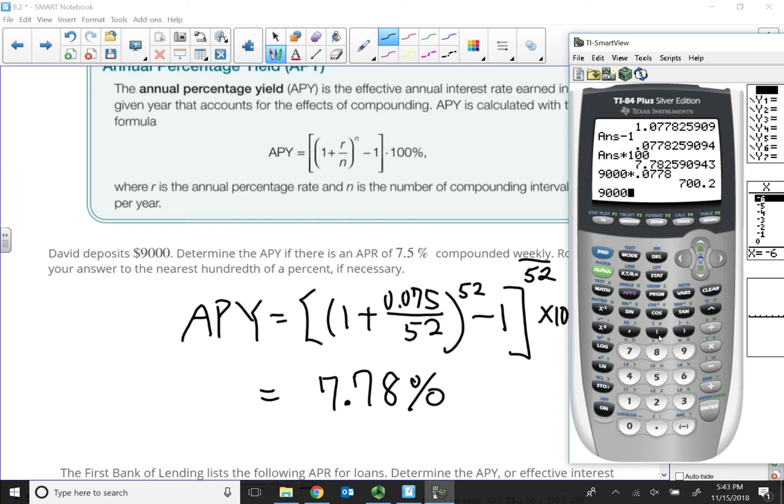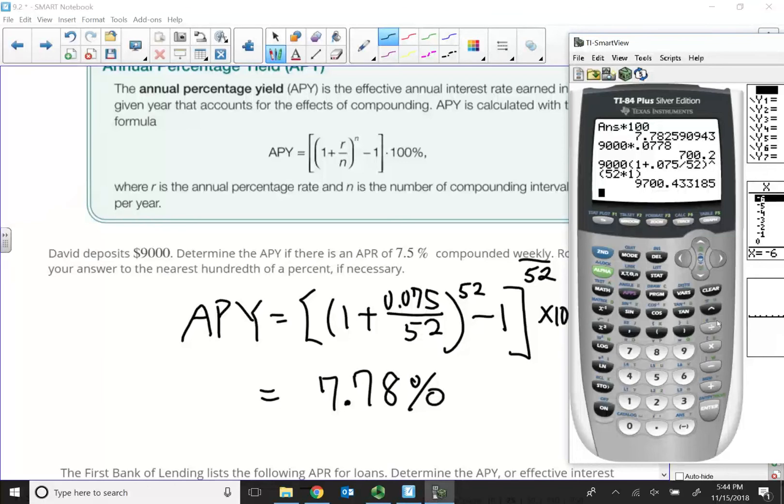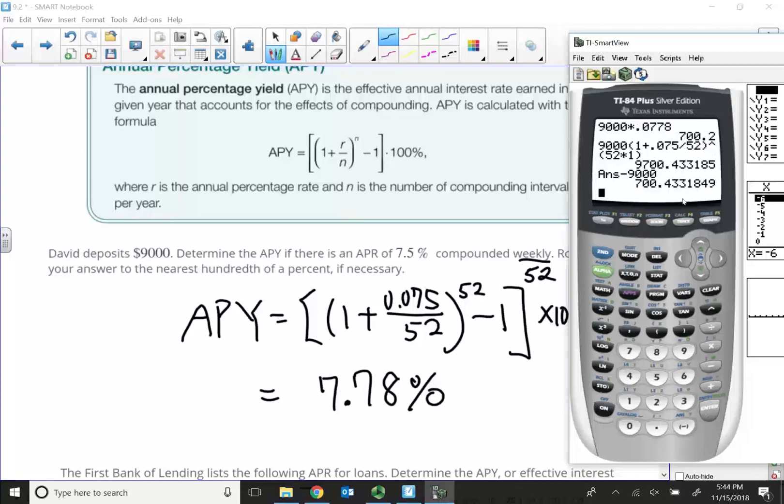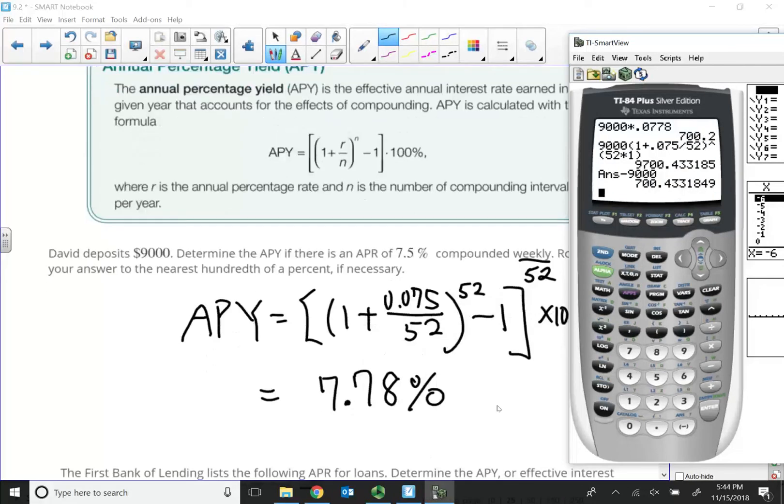So, if I will use my compound interest formula, like I did before, 1 plus 0.075, divided by n is 52, raising to the 52 power, n times t, just do it one year at a time, which is 9, which is giving me 9700.43. So, if I subtract off my principal, my interest that I earned is actually $743, which is very close to my estimation of 720 cents. So, that's called the effective yield, effective annual interest earned at the end of the year.